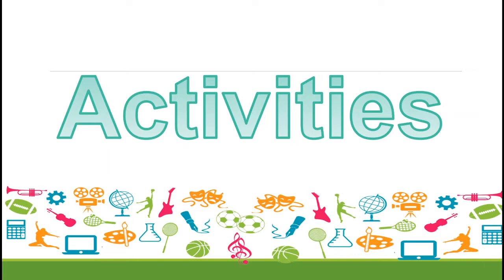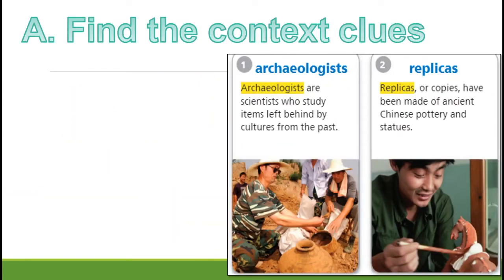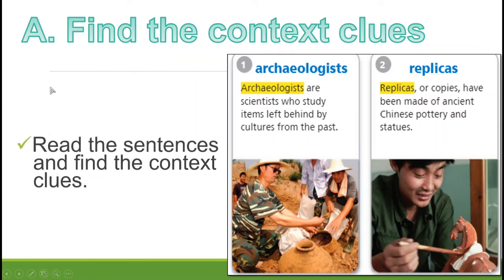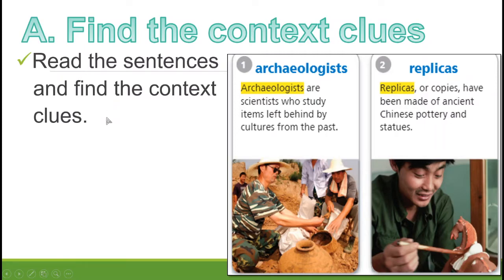Now we have our activities. Before we start any lesson we always have vocabulary and reading activities. For the vocabulary part, letter A is to find the context clues. In your book on page 488 you can see 'archaeologists' and 'replicas.' Read the sentences and find the context clues. For example, number one: archaeologists are scientists who study items left behind by cultures from the past.